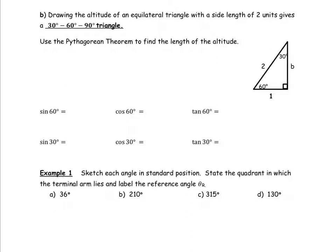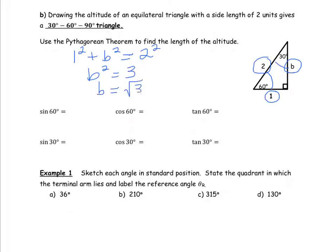The second special triangle to memorize is the 30-60-90 degree triangle. It has 30 degrees in the top right corner, 60 degrees in the bottom left, and 90 degrees, which adds up to 180. The base leg length is 1 and the hypotenuse is 2. Using the Pythagorean theorem: 1 squared plus b squared equals 2 squared, so b squared equals 3, and b equals the square root of 3. This special triangle gives us exact trig values for both 30 degrees and 60 degrees.